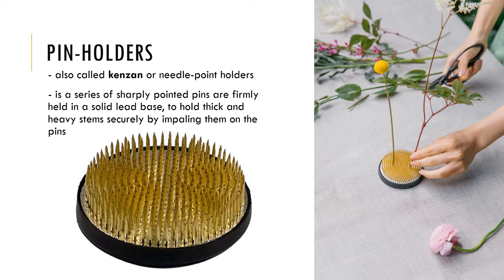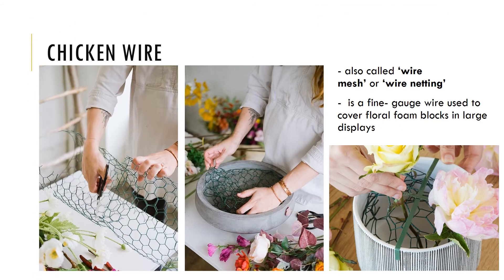Next we have the pin holders, also called the kenzan or needle point holders. As you can see, the pins are sharply pointed, holding heavy stems more securely. Next is the chicken wire, which in large displays is used to cover floral foam blocks — you put the floral foam first, then the chicken wire, so it can hold larger amounts of flowers better together.